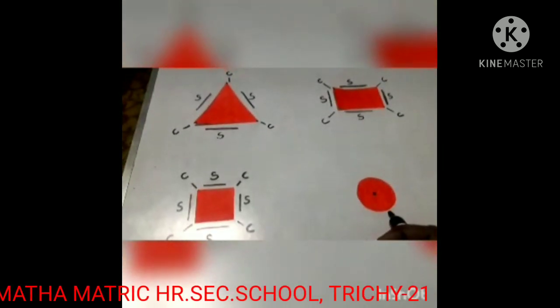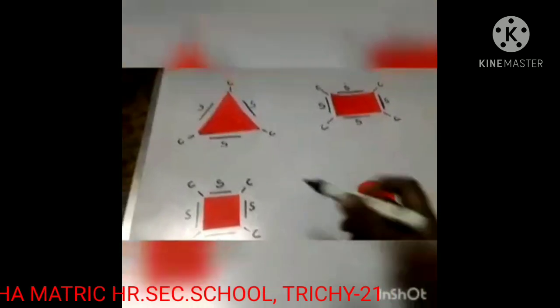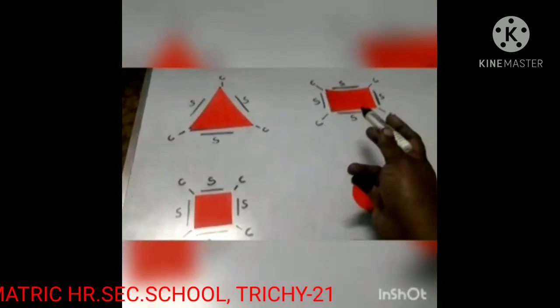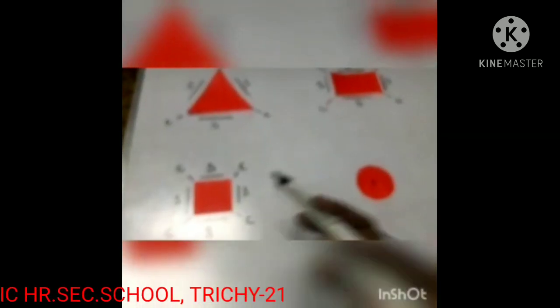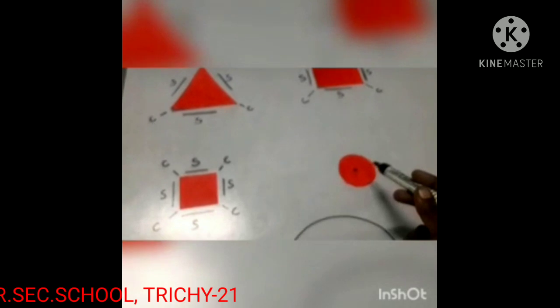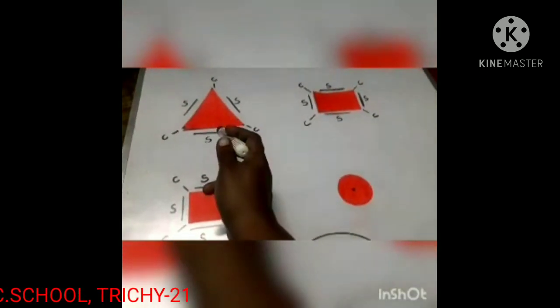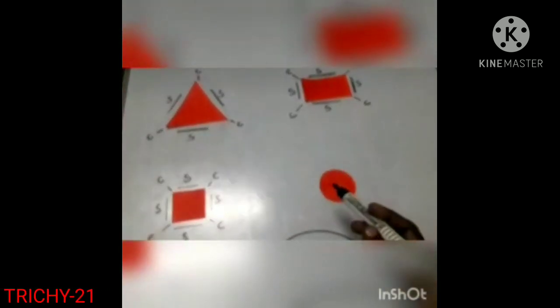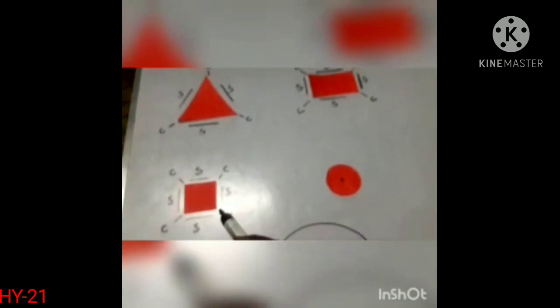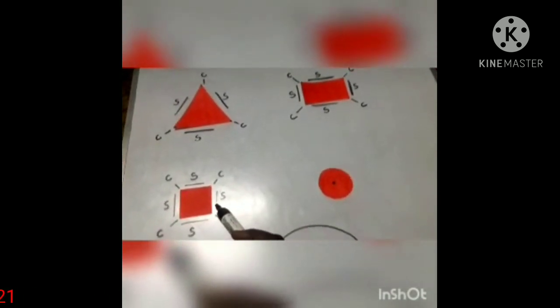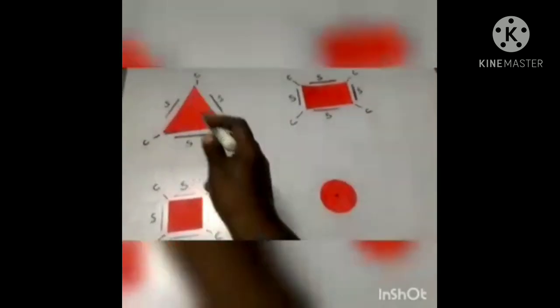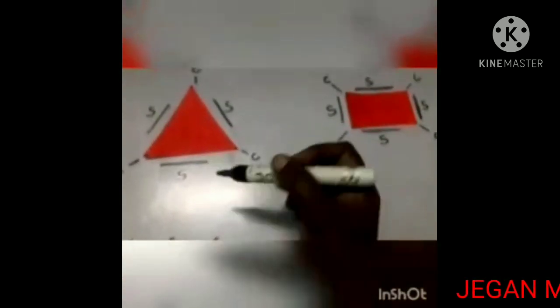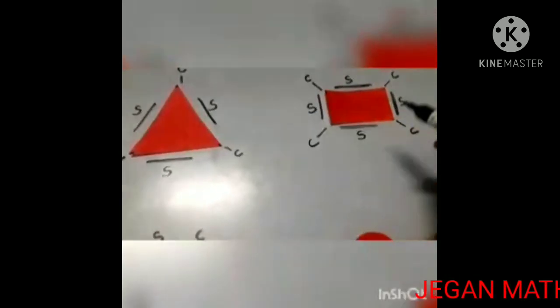Look at these shapes. Can you see? Triangular shape, rectangular shape, square shape, circle. This shape is triangular, this one is rectangular, this shape is circle, this one is square. Triangle, rectangle, circle, square. In the last class, you have learned about this triangle and rectangle in detail.